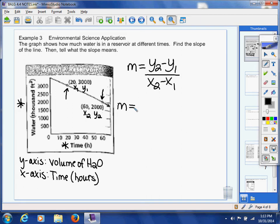All right, so let's find y sub two. y sub two is 2,000 minus, let's find y sub one, which is 3,000. We're going to divide that by x sub two, which is 60, minus x sub one, which is 20.